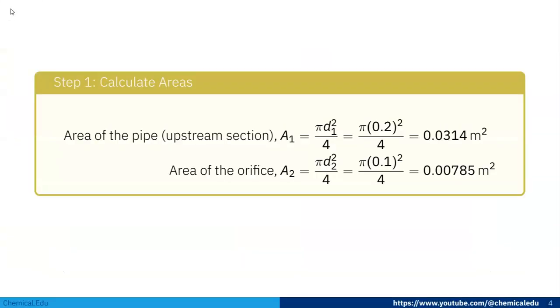Now first we calculate areas. Area of the pipe upstream section A₁ = π/4 × d₁² = π × (0.2)²/4 = 0.0314 m². Area of the orifice A₂ = π/4 × d₂² = π × (0.1)²/4 = 0.00785 m².